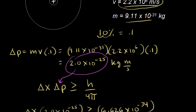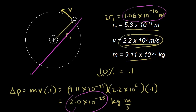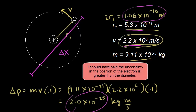Going back to the picture of the hydrogen atom, 2.6 times 10 to the negative 10 meters is greater than the diameter of our hydrogen atom according to the Bohr model. So the uncertainty in position would be greater than the diameter itself. The Bohr model is wrong — it claims the electron orbits at a certain radius with a certain velocity, but the uncertainty principle says this isn't true.